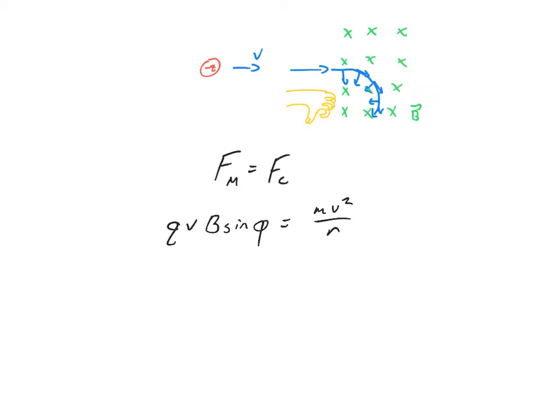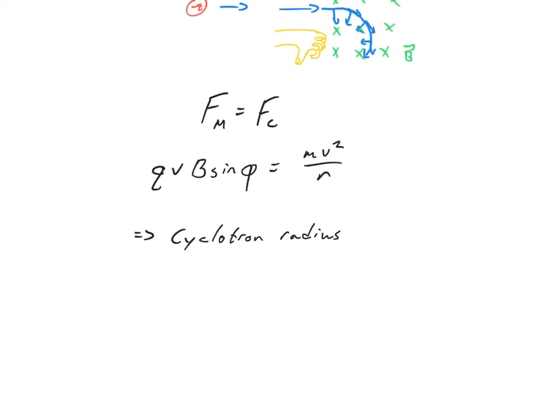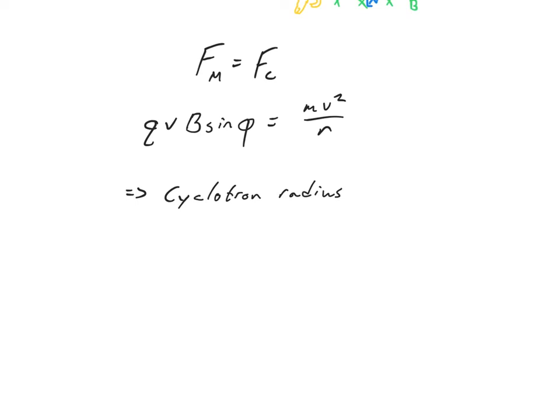The most common thing to do is to solve for what's called the cyclotron radius. If I just stop for a second and pretend that my angle of phi is just 90 degrees, so I'll just make this whole thing equal to 1,